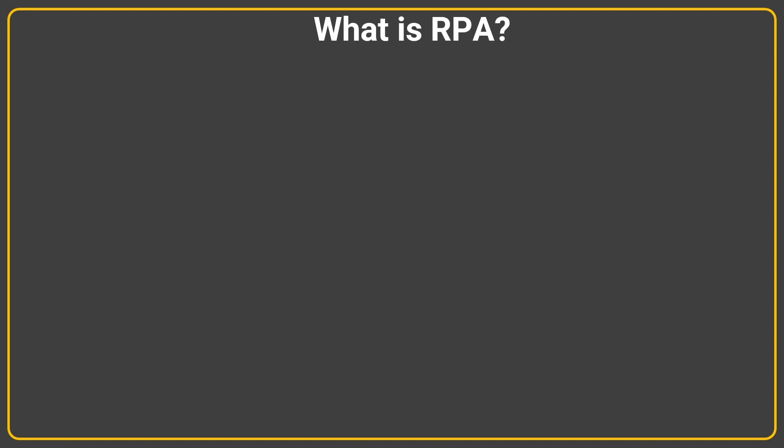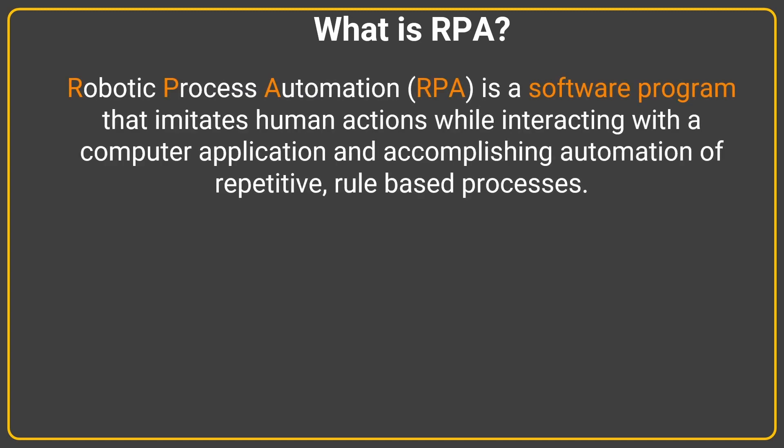Robotic process automation is a software program — not like any physical robot which has legs, arms, and brings out a keyboard and starts coding for you. It's a software program which will try to record human actions, which is a collection of keystrokes, mouse events, and some rule-based decision actions. These actions are played by the computer to mimic exactly what a human does.